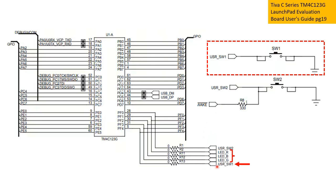Let's take a look at the RGB LED first. The red LED, LED_R, is connected to PF1 — that is Port F bit 1. The blue LED, LED_B, is connected to PF2, and the green LED, LED_G, is connected to PF3.